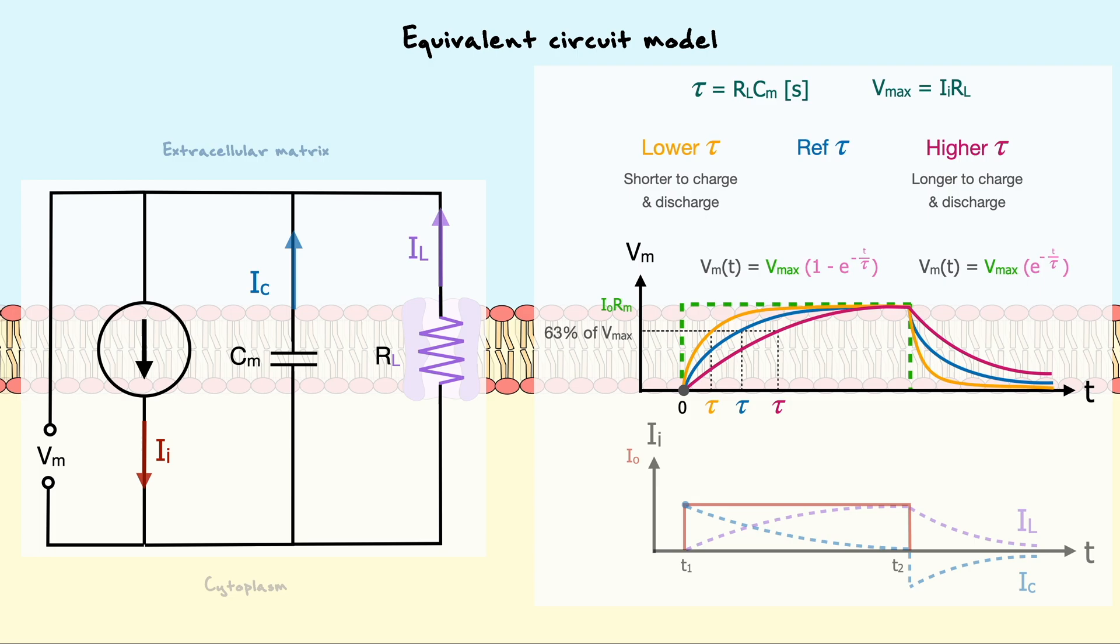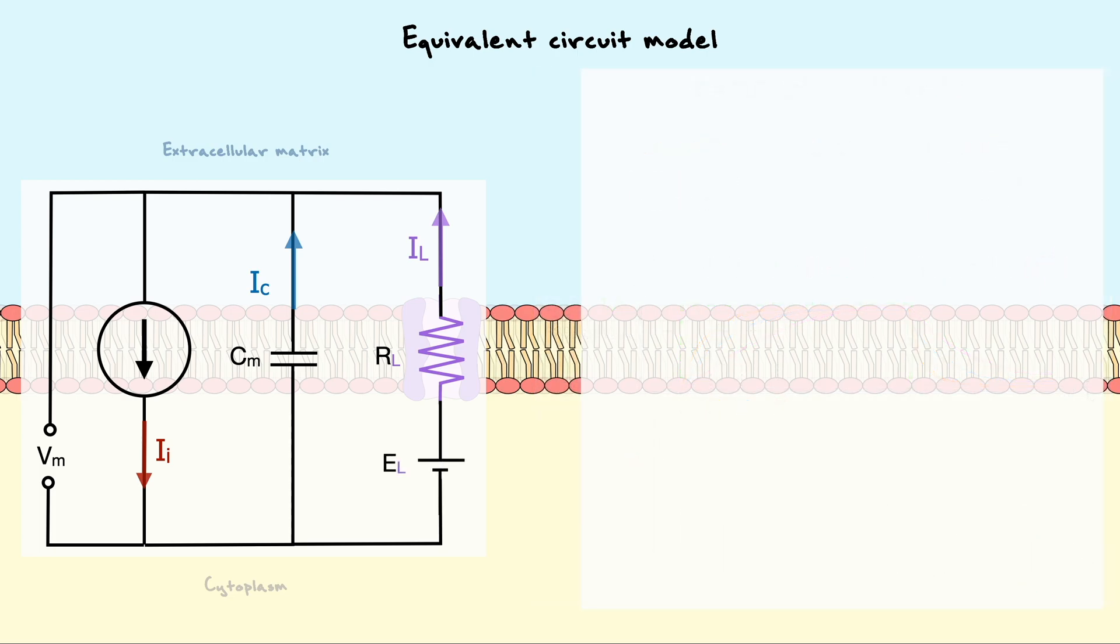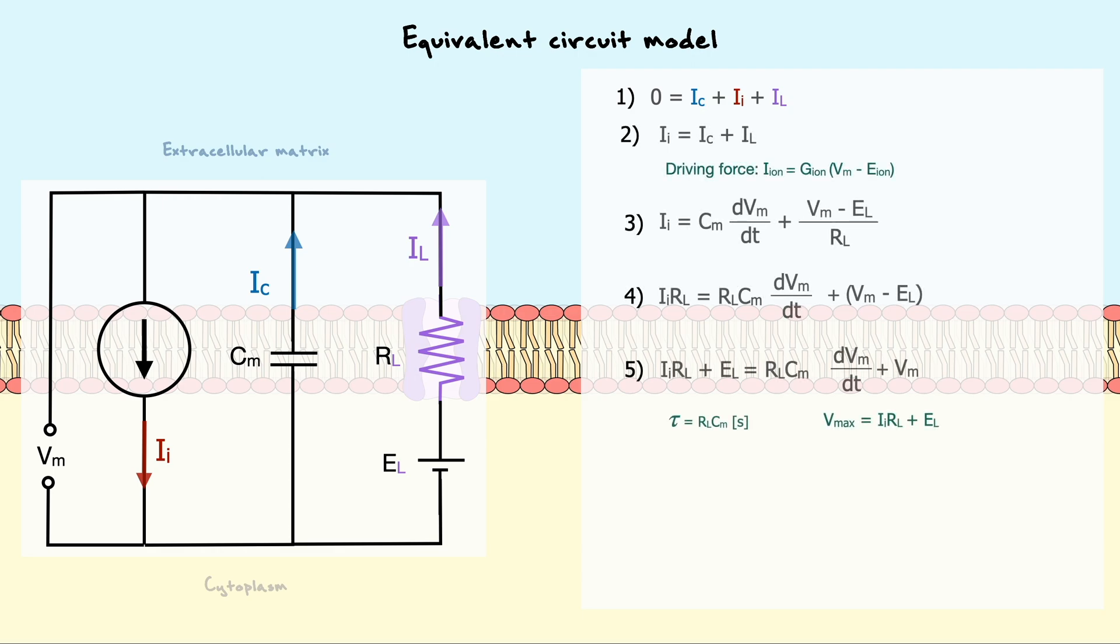You probably remember that there is another component to the channels, which is the driving force coming from the electrochemical gradient that is associated with each ion. When we include the driving force, and do the math following the same principles as in previous scenarios, you can see that the model ends up being the same. The difference simply lies in the expression of Vmax, which now is offset by the Nernst potential of the leak channel. Hence, even with the battery added, it is still the same relation.